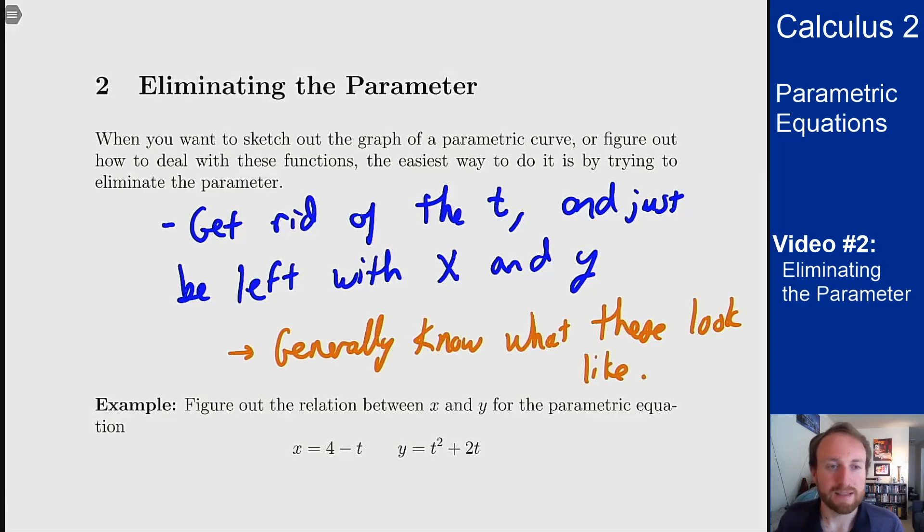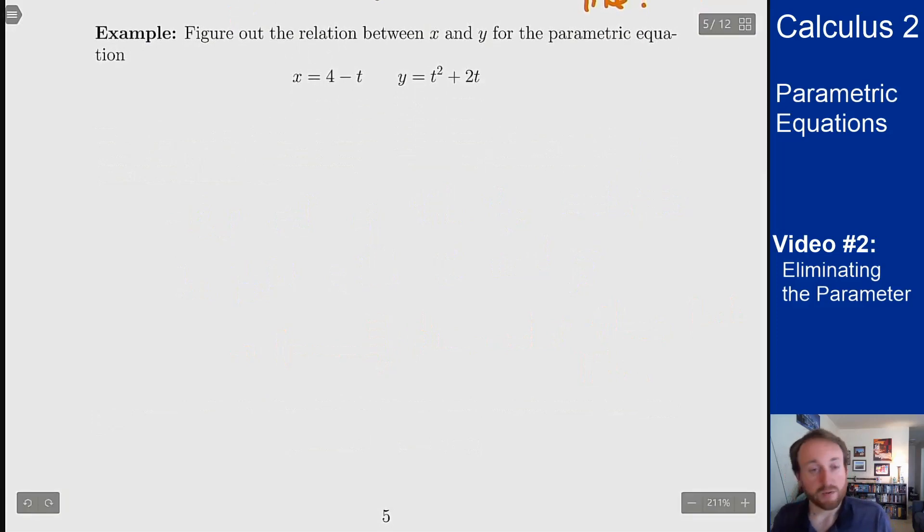So the first example we're going to look at is that same curve from before that we got a parabola with last time. Figure out the relation between x and y for the parametric equation given here: x equals 4 minus t and y equals t squared plus 2t.